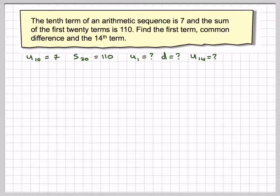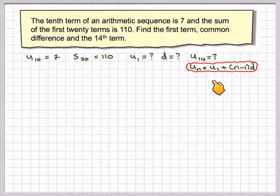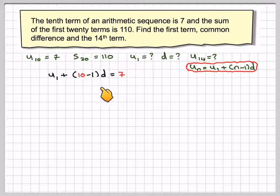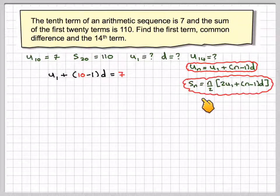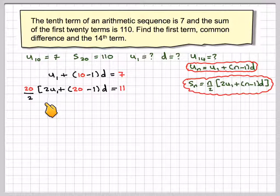So we're going to make some equations with just this information. We know that Un is equal to U1 plus N minus 1 times D. So using this, U10, we're going to have U1 plus 10 minus 1 times D must be equal to 7. And then for the sum, we know that Sn is equal to N over 2, brackets 2U1 plus N minus 1 times D.